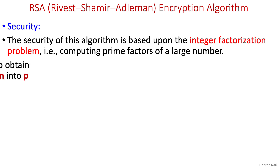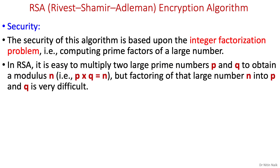In RSA, it is easy to multiply two large prime numbers p and q to obtain a modulus n, but factoring that large number n back into p and q is very difficult.